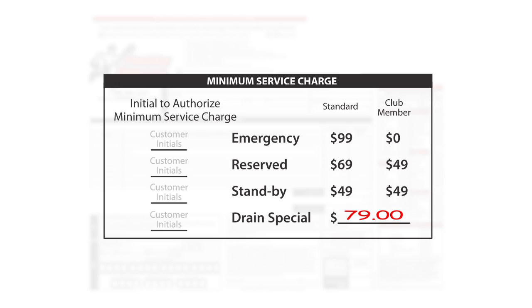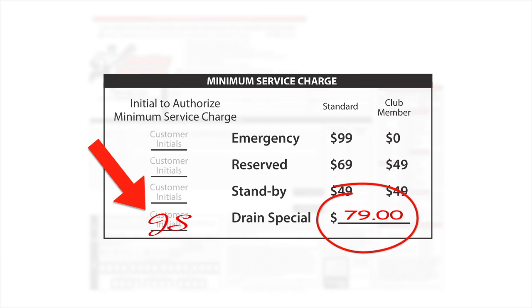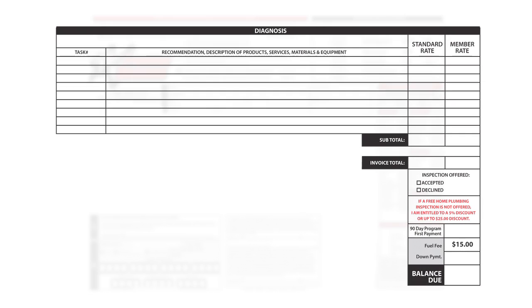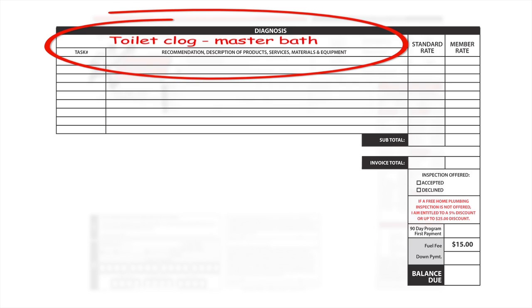Each service call has a base price point — circle the applicable one and have the customer initial next to it. The third section is the diagnosis section. Any serviceable action you perform will be written here. On the very first box, write the reason for the service.